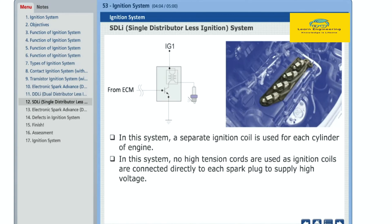In this system, a separate ignition coil is used for each cylinder of engine. In this system, no high-tension cords are used as ignition coils are connected directly to each spark plug to supply high voltage.